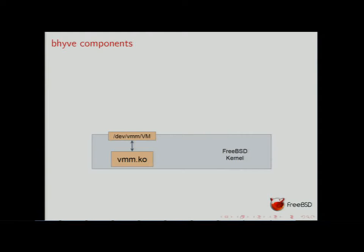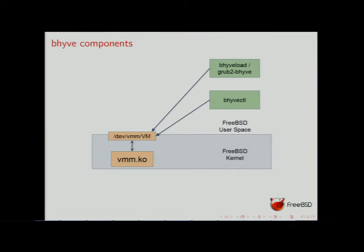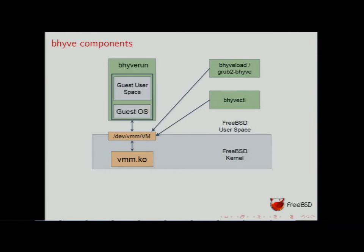Let's look at the Beehive components. In the FreeBSD kernel, we have the VMM.ko kernel module, which exposes an interface for each virtual machine at /dev/vmm/<name>. Using this device, bhyve-load loads the kernel image into memory. With bhyve-ctl you can get or set various fields of the VM state. To run the VM, bhyve-run does IOCTLs to /dev/vmm, telling the FreeBSD kernel to run the VM. Exceptions that can't be handled by the kernel are sent up to bhyve-run — like device simulation, which is almost entirely done in bhyve-run, except small critical parts done in the kernel.